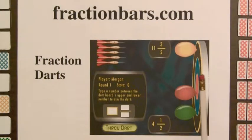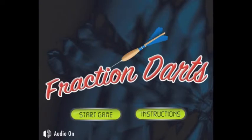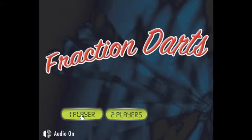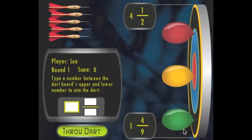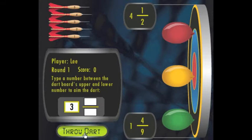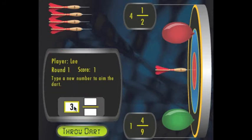The second of these two games is called Fraction Darts. In Fraction Darts we will select the option of one player, a difficulty level of one, and type the player's name. The height of the dart board is mixed numbers; it goes from one and four ninths to four and one half. The player approximates the location of a balloon, types in a number, clicks throw dart. Nice shot! Thanks.